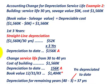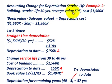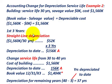Now for our second example — accounting change for depreciation service life. We have a building with a service life of 30 years, a salvage value of zero, and a cost of $1,560,000. After the third year, we're going to change our service life from 30 years up to 40 years, and we're going to use straight-line depreciation throughout.